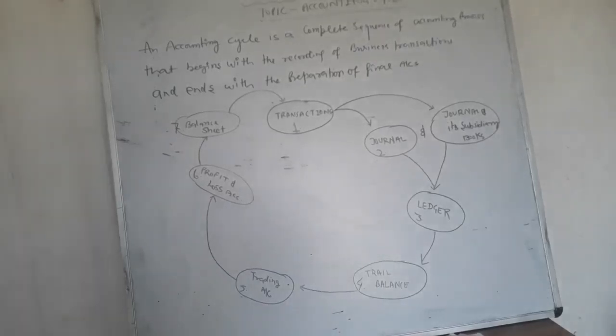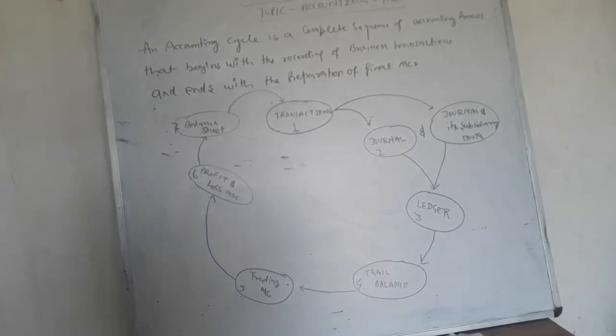To prove the accuracy of the work done, we have to go for the next step. This is known as trial balance. Trial balance is a statement where we have to record the balances of the ledger in debit and credit forms, and it will be tallied if it is correct.